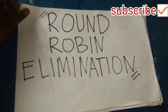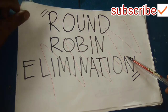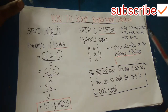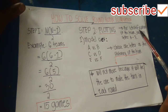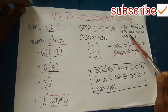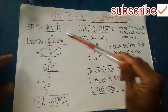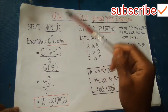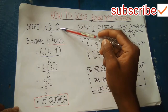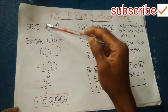We will elaborate on how to solve the Round Robin elimination for even numbers. There are three steps we will follow. Step one: we need to use the formula n times (n minus 1) divided by 2, where n represents how many teams are included or participating in the game.